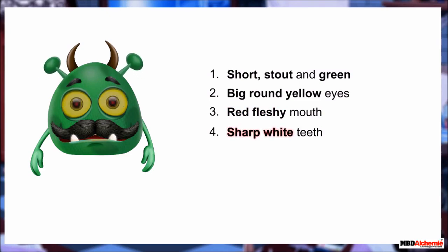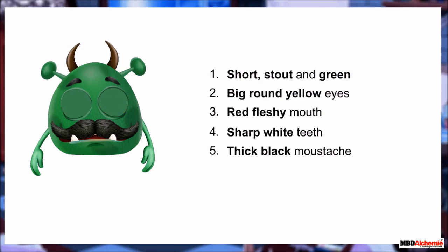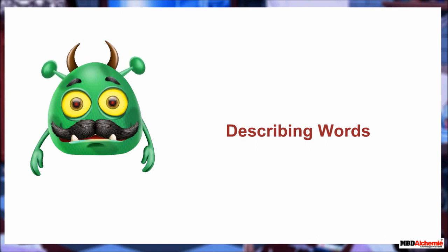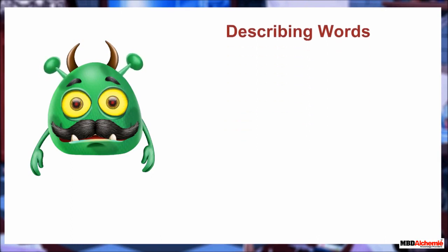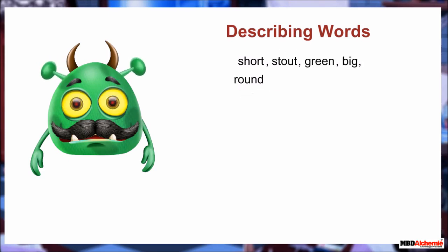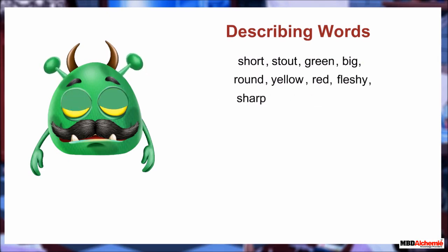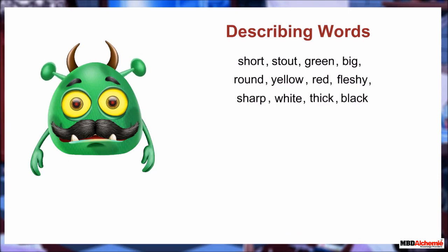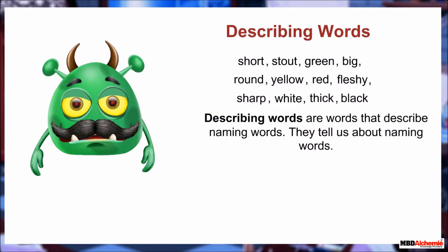Did it have sharp white teeth? You have a great memory — it had sharp white teeth. Did Minty Monster have a thick black mustache? Kudos — it had a thick black mustache. We used certain words to describe Minty Monster's appearance. These are: short, stout, green, big, round, yellow, red, fleshy, sharp, white, thick, and black. Such words are called describing words.